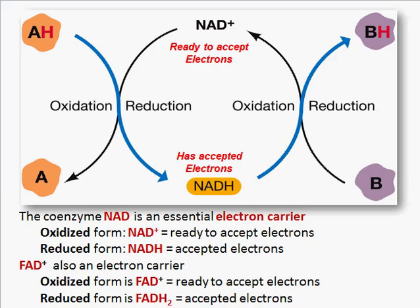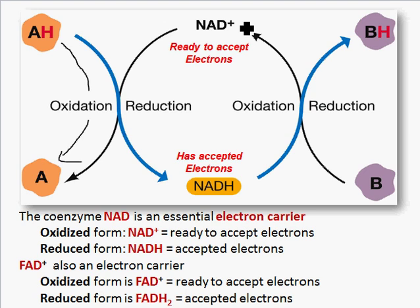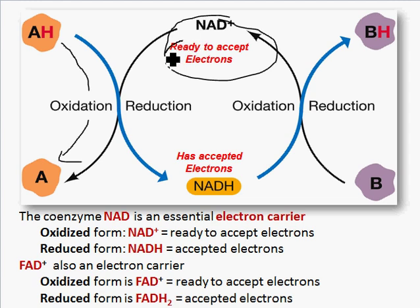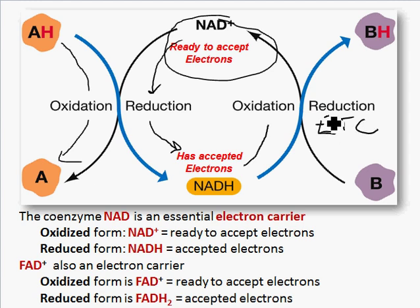When we break down glucose and its intermediates, some of the reactions are redox reactions and electrons are lost. Here AH is going to lose electrons and become just A. Those electrons aren't lost — they're grabbed by electron carriers. So we have NAD+, which will grab electrons, and when it does grab electrons it becomes NADH. It takes those electrons over to the electron transport chain, drops them off, and then it's ready to go back to glycolysis and the Krebs cycle to pick up more.